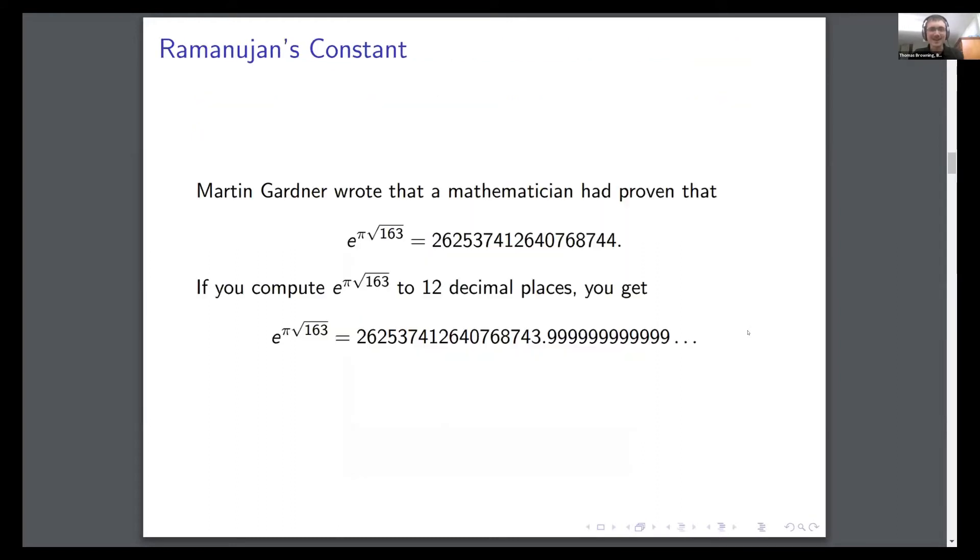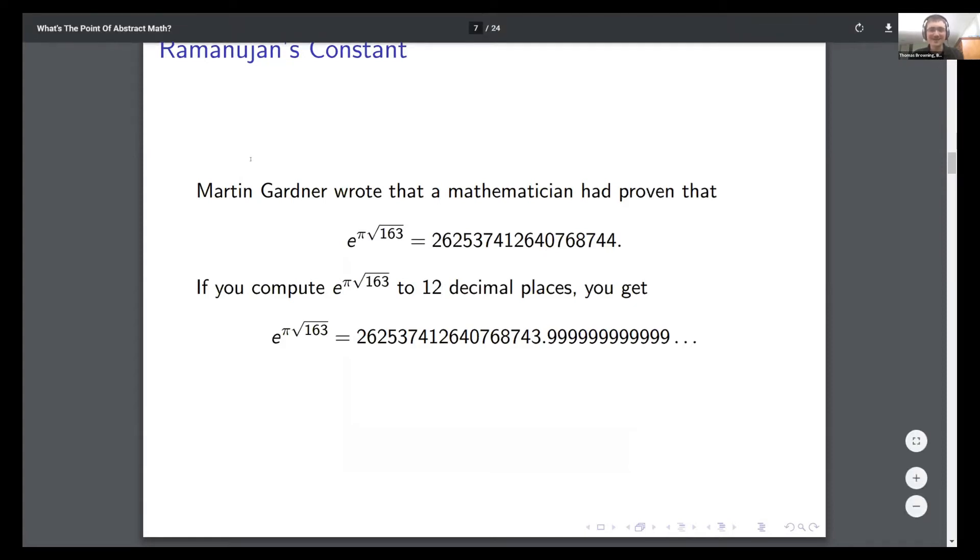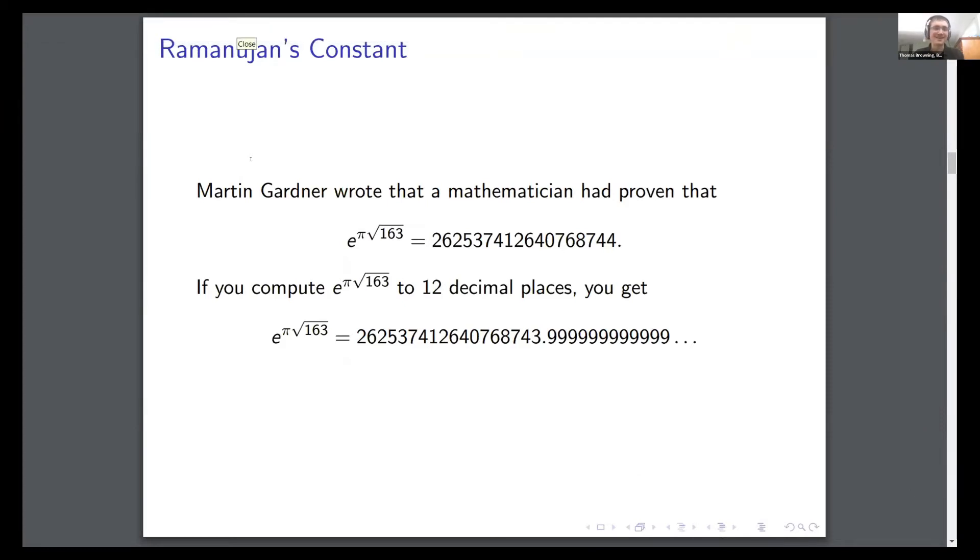The second one was this hoax where he claimed that e to the pi times root 163 happened to be exactly an integer. If you know anything about e and pi, this should strike you as strange because e and pi are supposed to be random. But if you computed this number to 12 decimal points, which, remember this is 1975, that would be pretty hard without a computer.